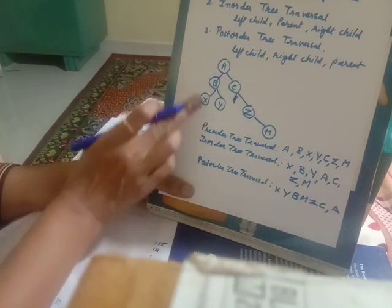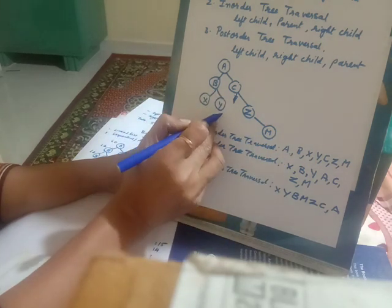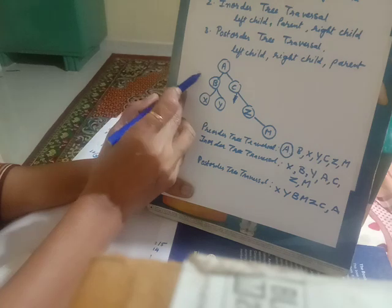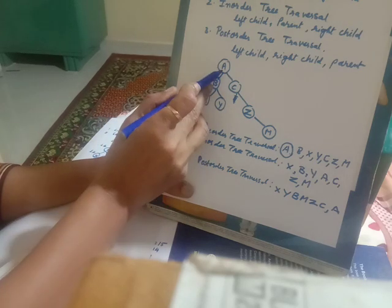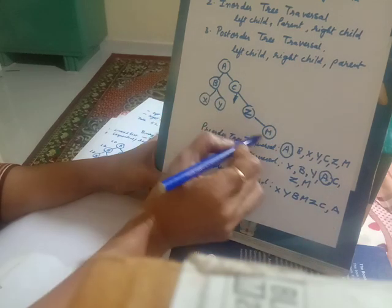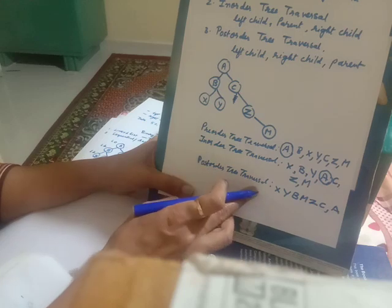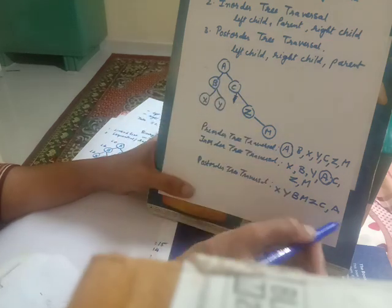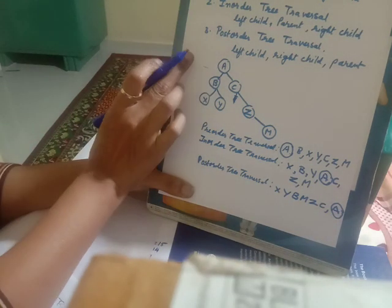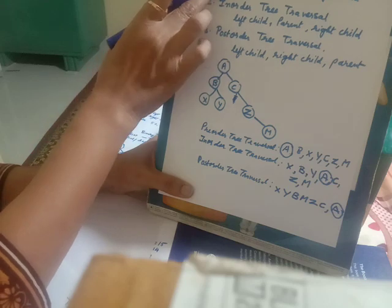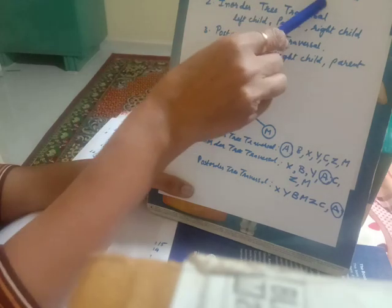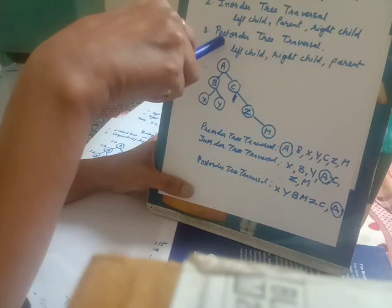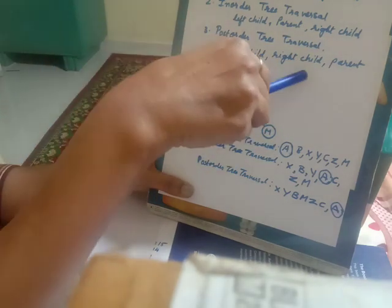To summarize: in pre-order traversal, the root node is processed first followed by all nodes of its left subtree, then the right subtree. In in-order traversal, the entire left subtree is processed first, followed by the root node, then the right subtree. In post-order traversal, the left subtree is processed first, then the entire right subtree, and finally the root node.